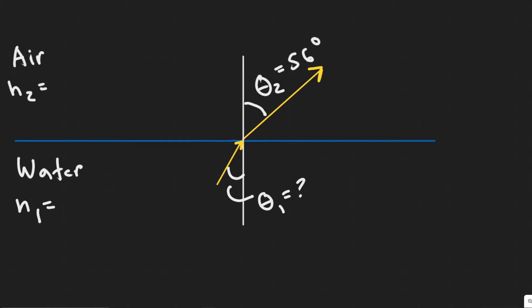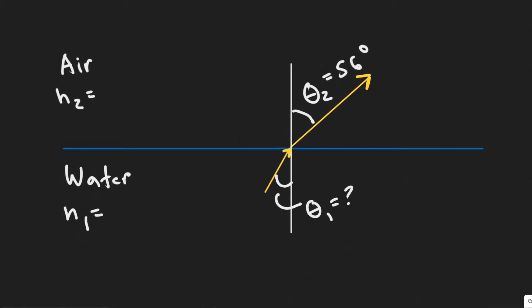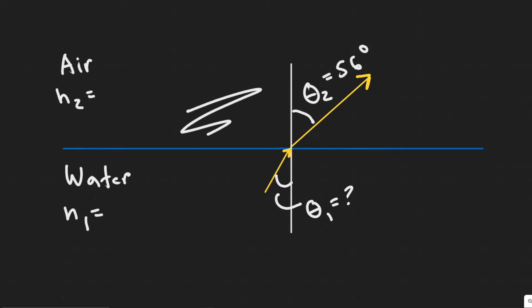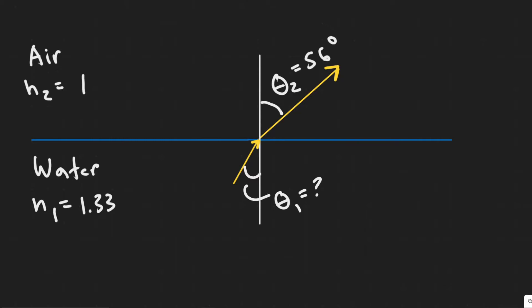We also need the index of refraction for both media. For air, the index of refraction is just 1. For water, the value is 1.33. The value differs depending on the type of medium you're in, and these are the values we'll use for this problem.